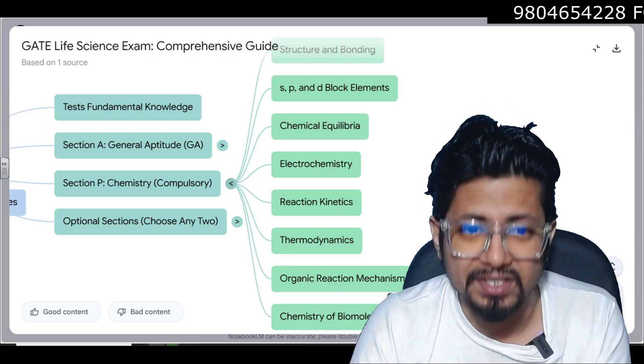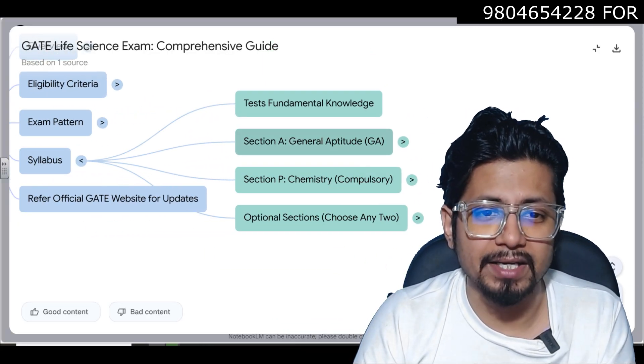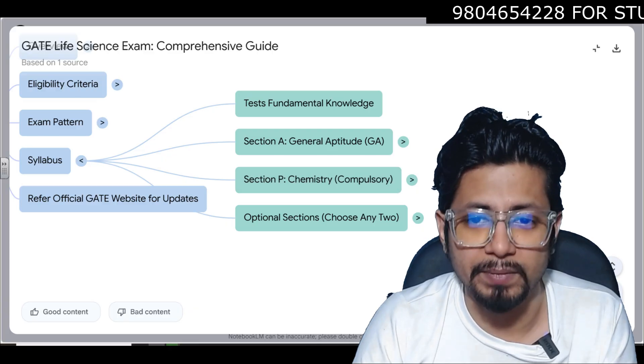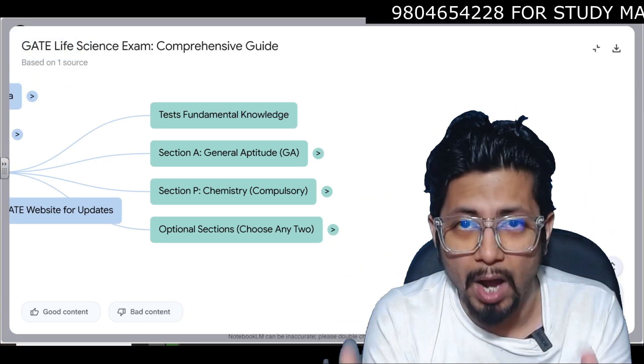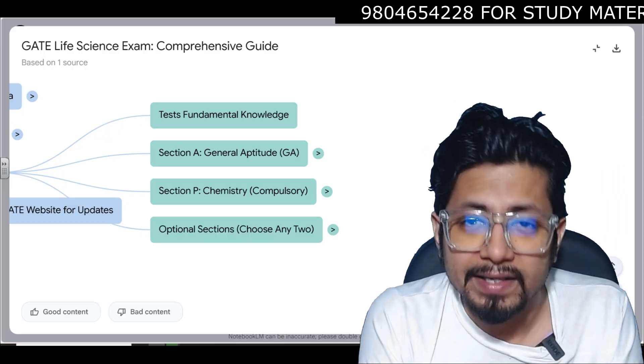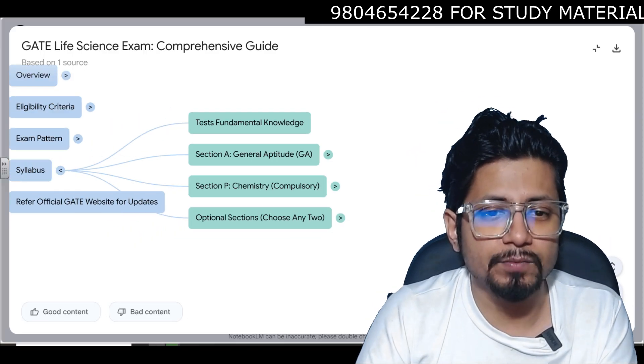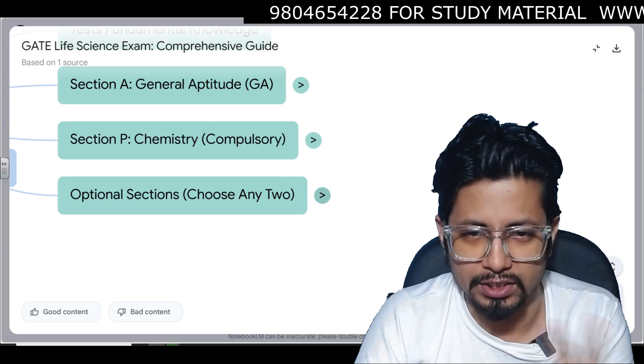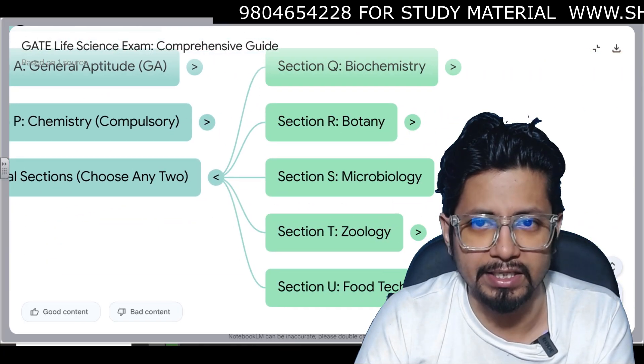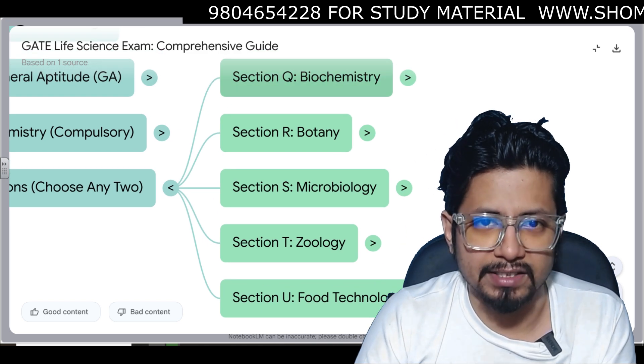You cannot skip it, you need to attend this. Section A and Section P, these two sections together will consist of 40 percent of the total marks of the GATE Life Science syllabus. Next we move to the optional section. Any two sections you can choose from the optional section.